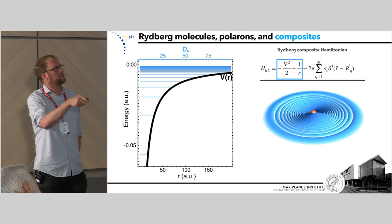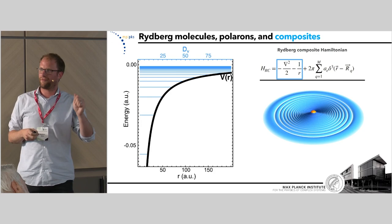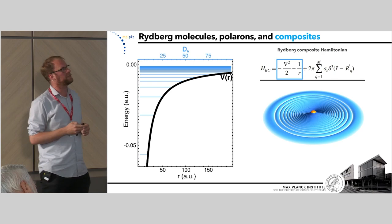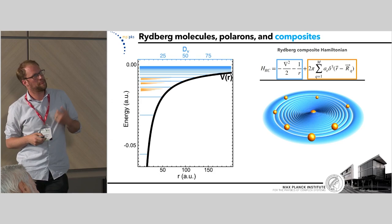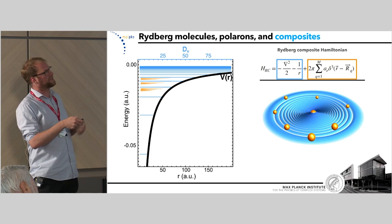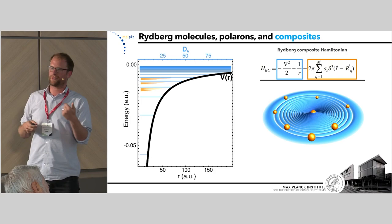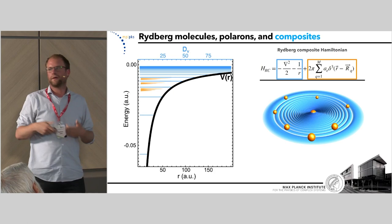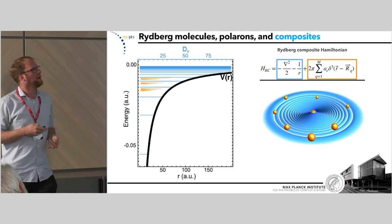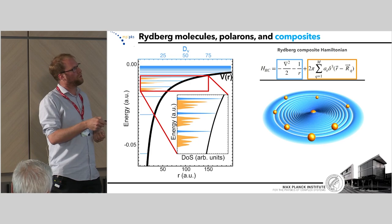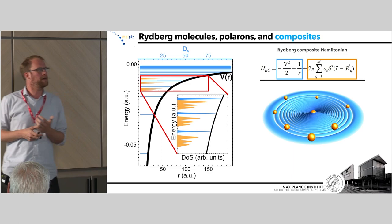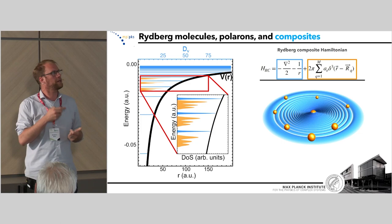Looking at this Hamiltonian: the blue box gives just the typical Rydberg spectrum, where we utilize the SO4 symmetry of the hydrogen atom to take advantage of the massive density of states at the degenerate levels. Including the term where the electron scatters off all these ground state atoms, a density of states gets kicked away from the degenerate level — for a single perturber this is the trilobite potential curve, and for many perturbers you see as many states shifted away as you have perturbers. As you increase the principal quantum number, this series of kicked-out states starts to resemble an interesting density of states.